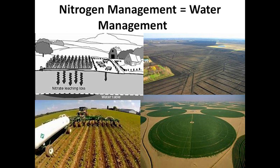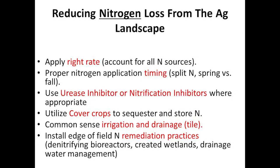Nitrogen management is really water management, because nitrogen moves around where the water is, while phosphorus stays with the soil unless in heavy concentration. To keep nitrogen on the landscape: apply the right rate, and timing is probably one of the most important factors. For soils prone to high leaching — sandy soils, soils over the Big Sioux aquifer, or where there's a lot of nitrate in the profile — a split application regime works well, putting on some urea at planting time then coming back with in-season side dressing.